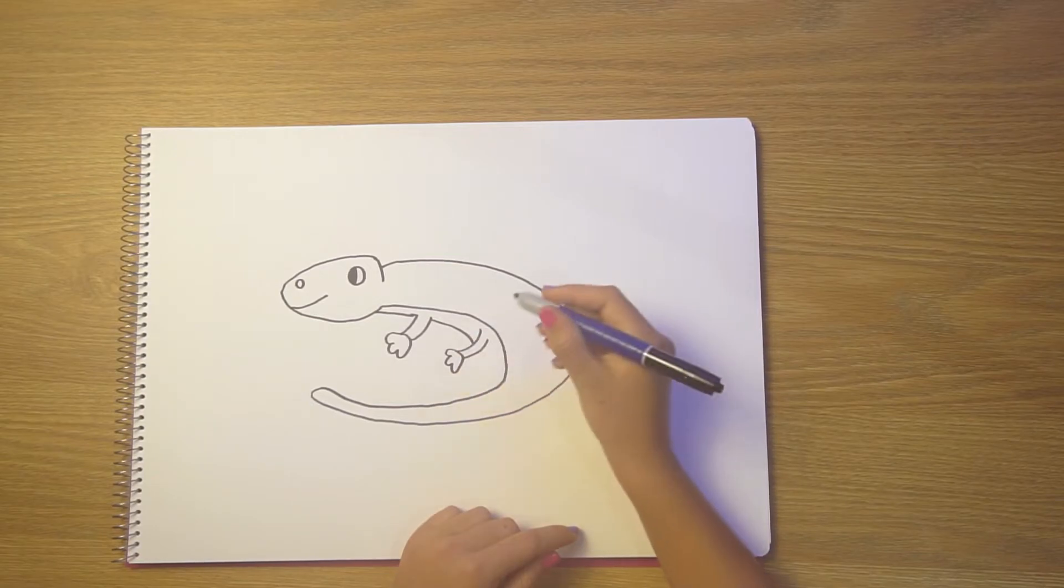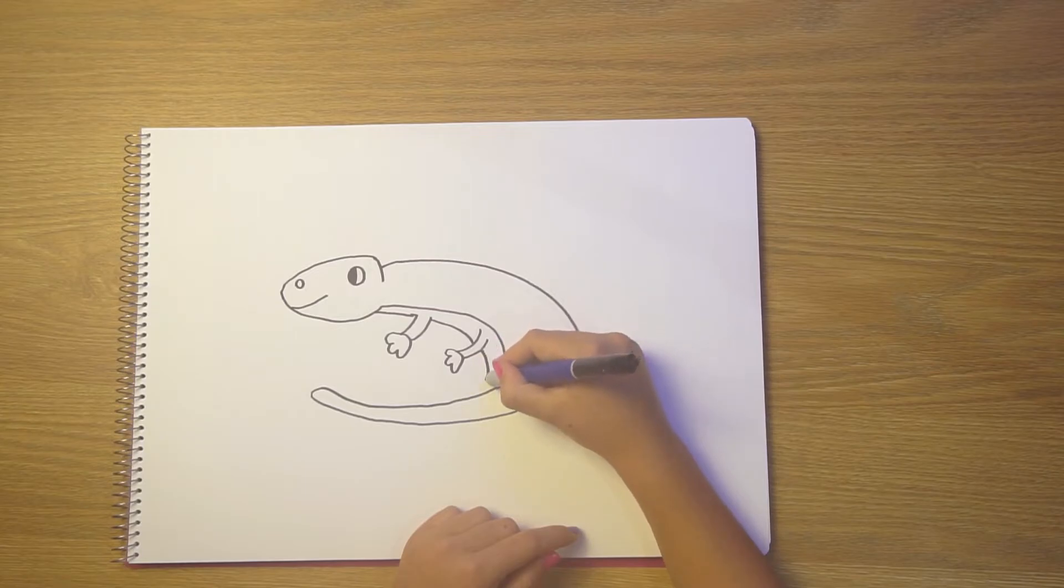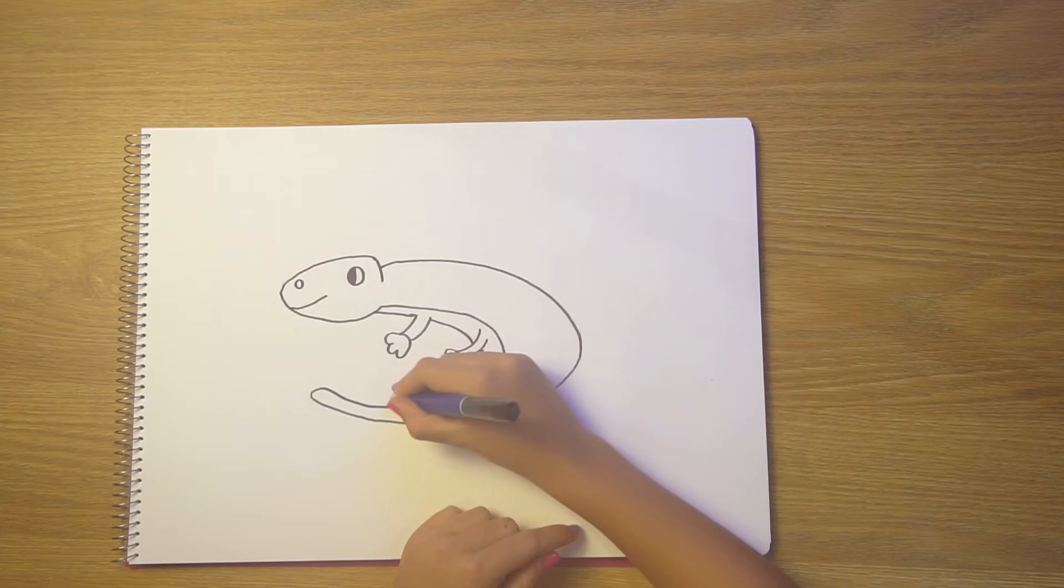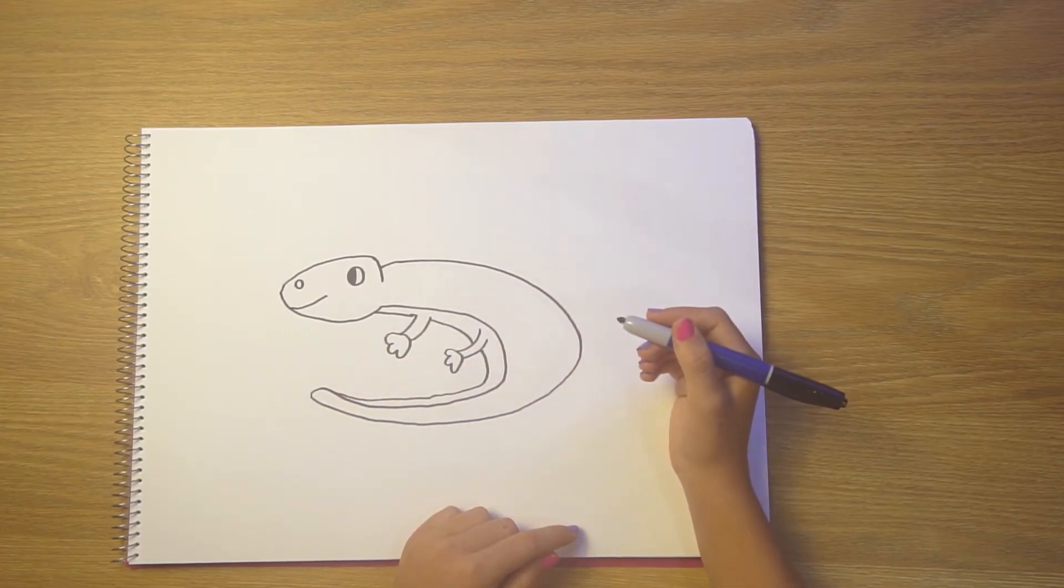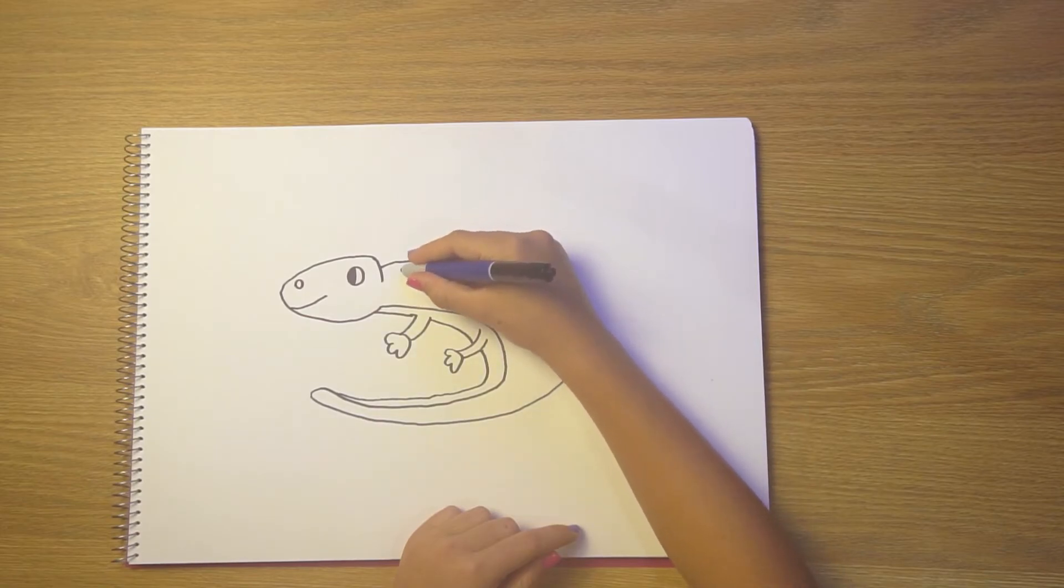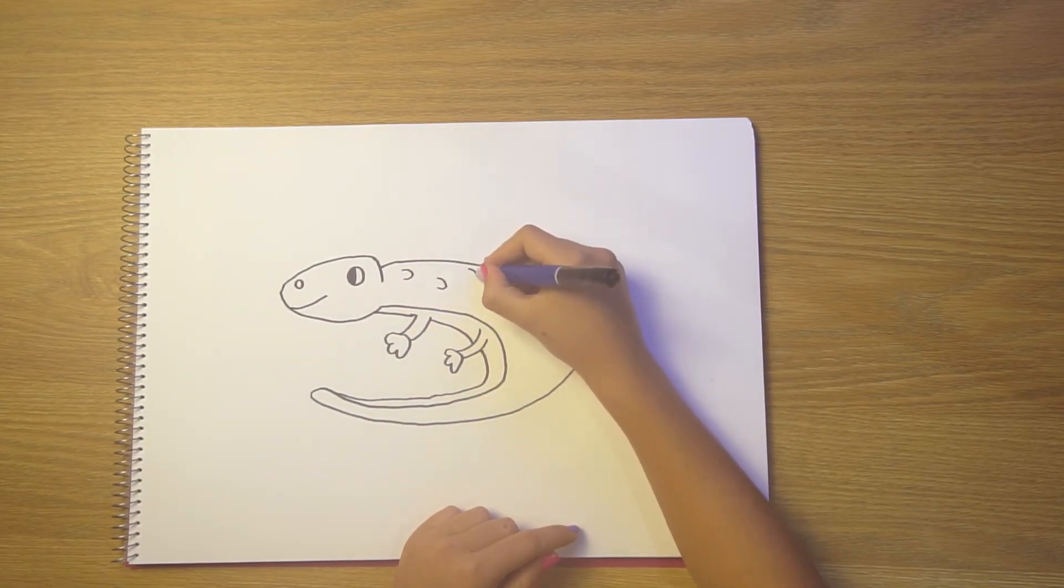Follow the curve to the tail all the way around. Now let's add some scales, because what's a lizard without scales? As many as you like.